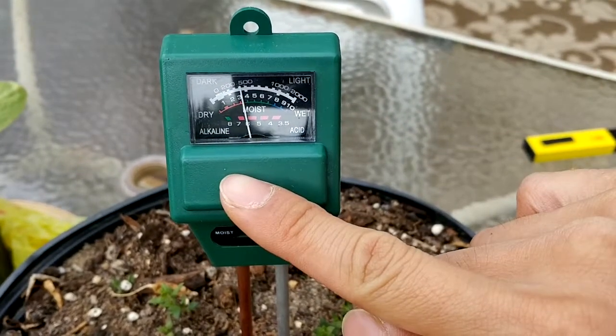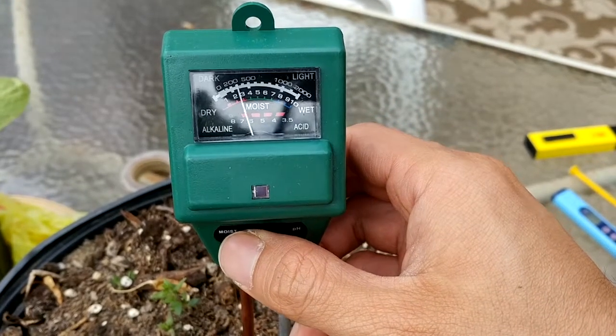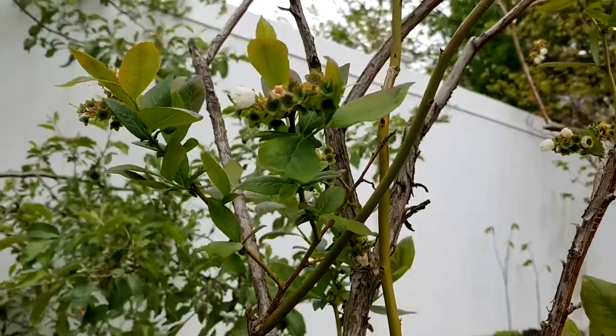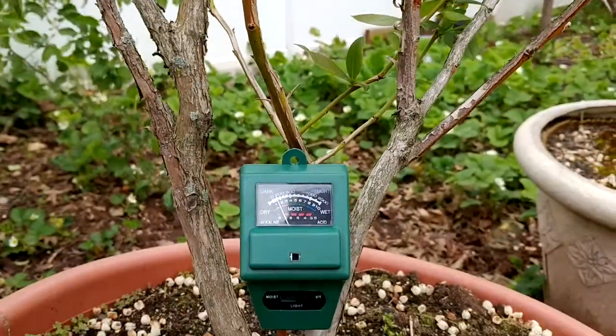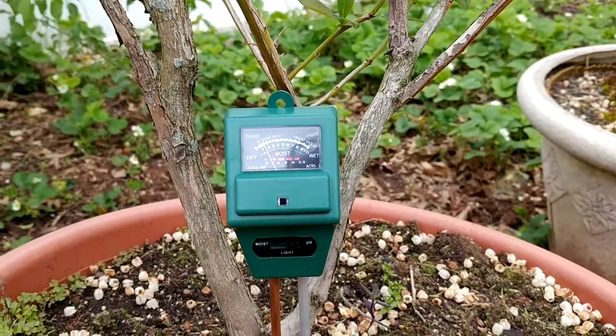This is great for knowing when to amend soil for plants that love certain kinds of soil conditions, like acidic soil for blueberries, raspberries, and blackberries. You can also gauge whether or not an area is receiving enough light at a given point in the day, and whether or not your plants need watering, which is useful for indoor potted plants.